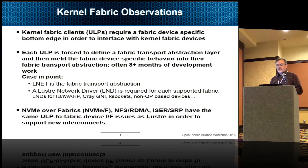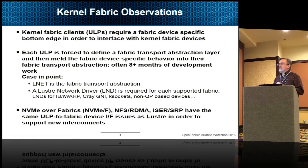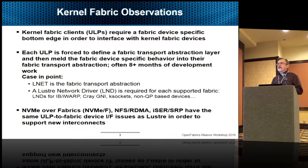In the kernel they talk about upper layer protocols — these would be the clients. They require a known lower edge to write to. Each upper layer protocol is forced to find its own transport abstraction layer. This is a similar issue that we've seen in user space, where each MPI has a network abstraction layer, each parallel file system has a network abstraction layer. These are not easy to write — they can easily take eight months or more of developer effort.